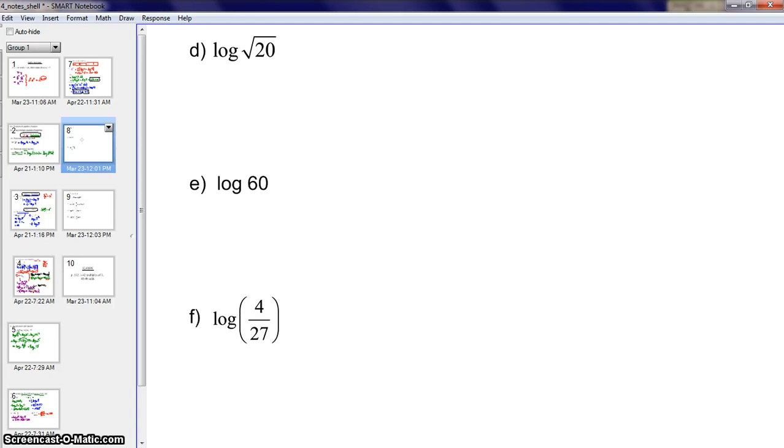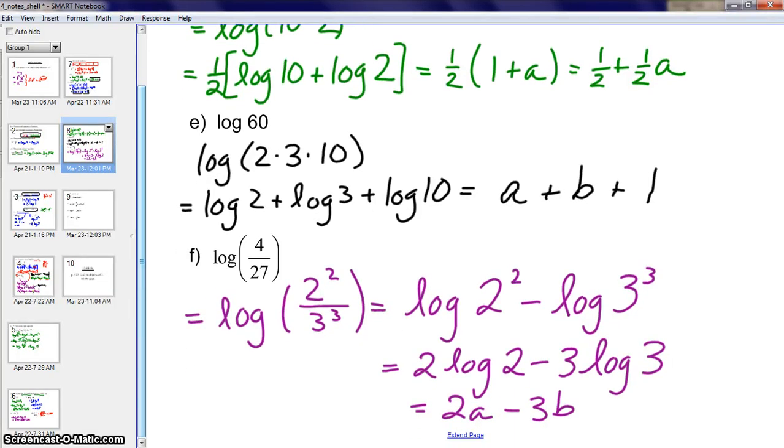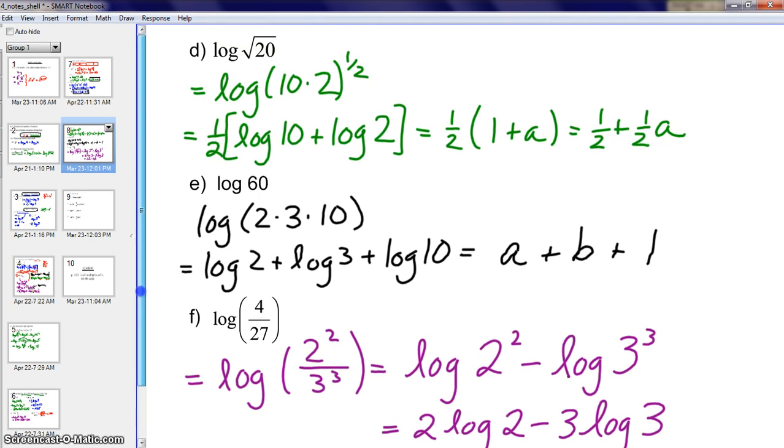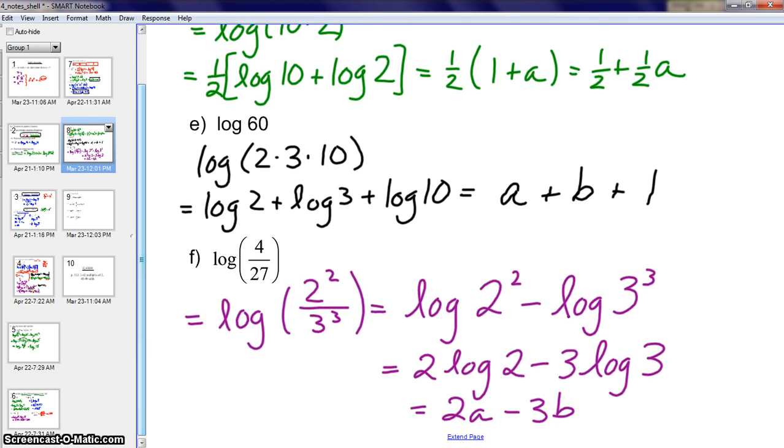Here are a few more examples that I'd like you to try. If you have already done these, great. And if you haven't, pause the video now, and then you can check your answers in a minute. Here are your answers for the next three. You can see I have 1 half plus 1 half A, A plus B plus 1, and 2A minus 3B. So feel free to stay on this screen for a little while if you need to check your work. Just pause the video, and if not, let's move on to the ending.